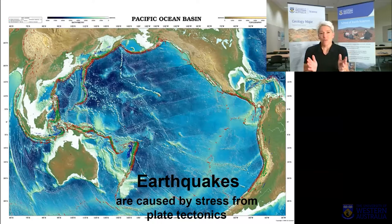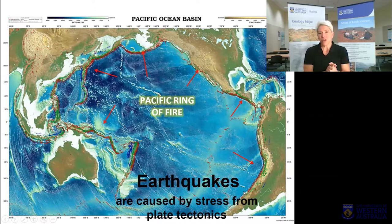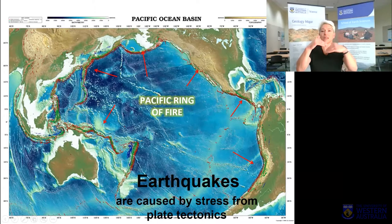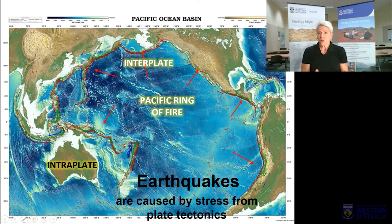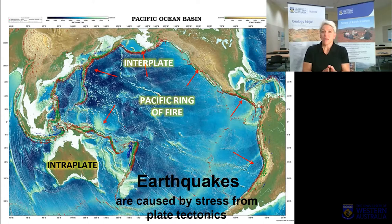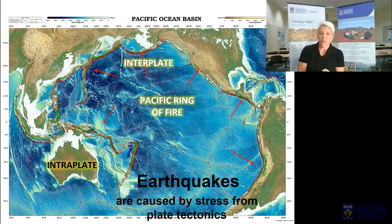Most people know that we have earthquakes at plate boundaries — you've heard about the Pacific Ring of Fire, a zone with a lot of earthquakes and volcanoes, where one plate is sliding under another. Australia is quite a long way from a plate boundary: about 3,000 kilometres to the Ring of Fire in Indonesia, and about the same to the Southern Ocean. Our earthquakes are called intraplate — within a plate — whereas the Pacific Ring of Fire earthquakes are interplate, between plates.